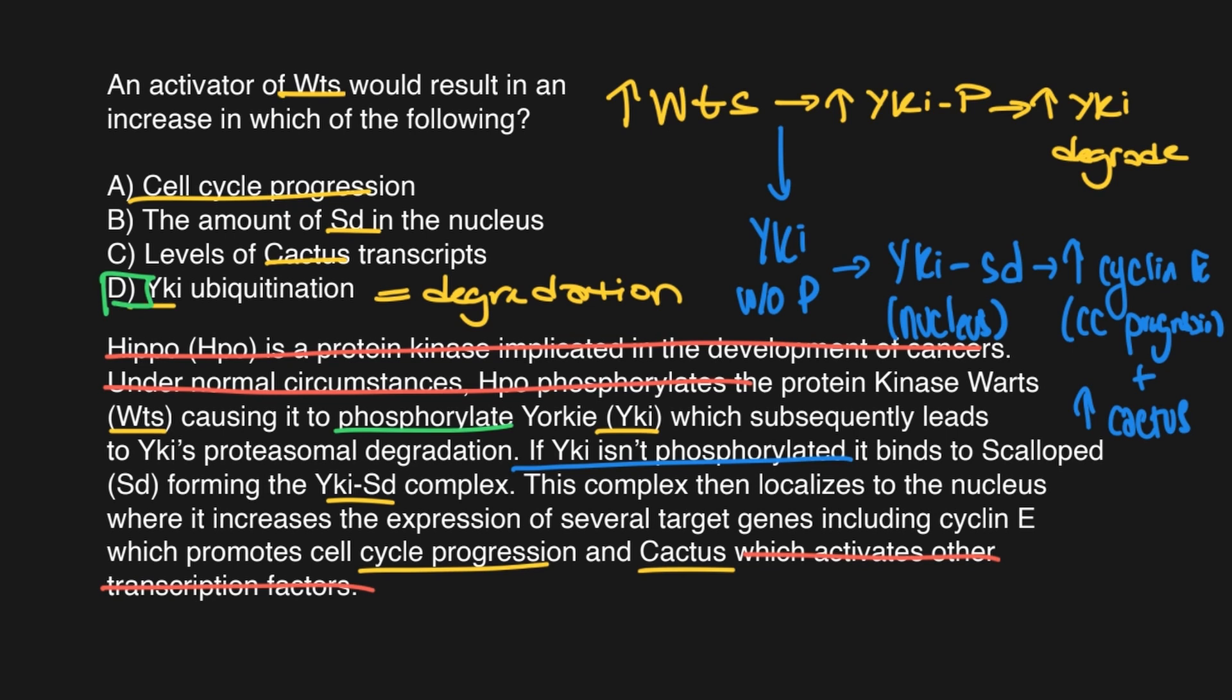As we step back here for a moment, we can see that if we were to activate WTS, we presumably wouldn't get YKI without the phosphorylation, which means that all of those other answer choices, cell cycle progression, the amount of SD in the nucleus and the levels of cactus transcripts would be down regulated or decreased. And therefore we would know that those are the wrong answer and we could get that D is the correct answer.